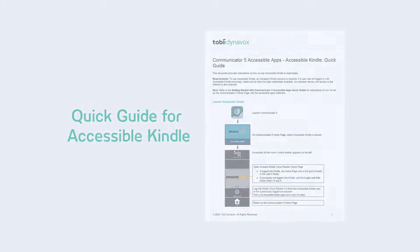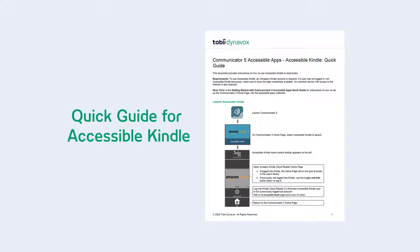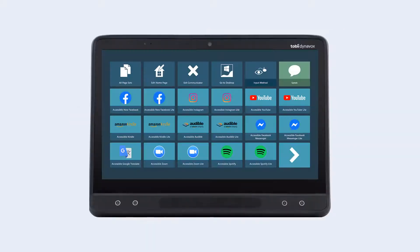Be sure to check out the Accessible Kindle Quick Guide for more detailed explanation of the pages and buttons. Also, check out the videos on the other Communicator 5 accessible apps.